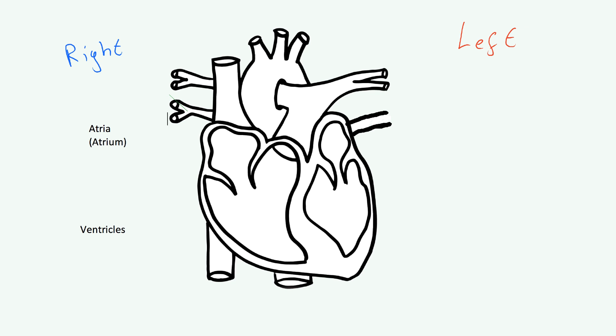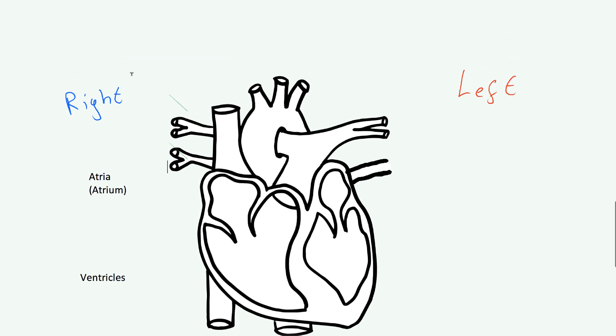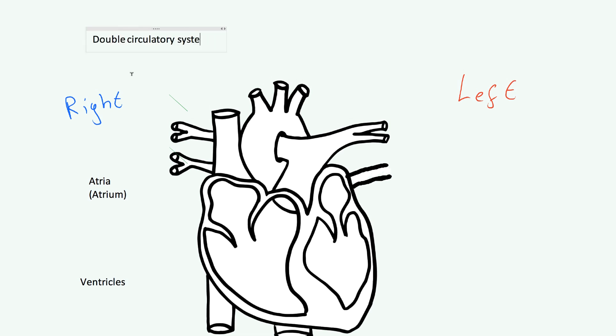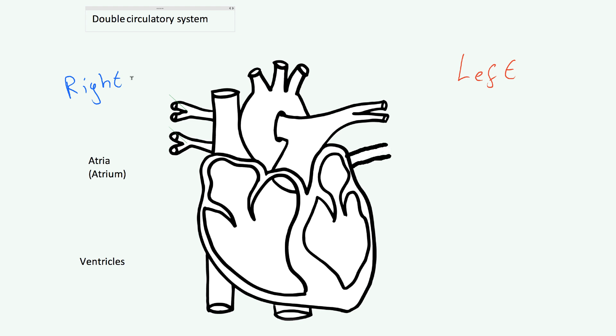Each side has a different job. In one complete cycle, your blood is pumped by the heart twice — and that is called a double circulatory system. Not all animals have this; fish, for example, have a single circulatory system where blood goes through the heart once, comes back, and that's a separate cycle. Whereas in our system, blood enters and is pumped by the heart twice in one cycle.